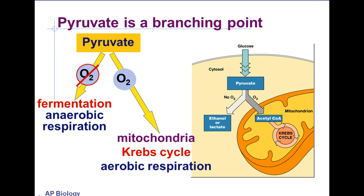Metabolism is defined as the sum of all the chemical reactions that occur in the cell in order to produce energy in the form of ATP. So we're looking at one, albeit large, part of the cell's metabolism — it's the sum of all the chemical reactions that define exactly what metabolism is.